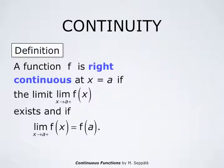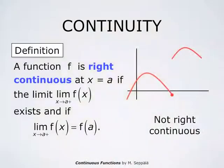Likewise, we say that a function f is right continuous at x equals a if the limit as x approaches a through numbers larger than a of f of x exists and that limit equals the value of the function f at a. This red curve is the graph of a function which is not right continuous at the point indicated by the red dot.